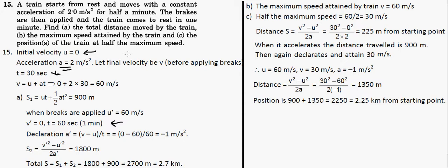First, I need to find the total distance moved by the train. We have the initial velocity, the time, and we need to find the final velocity. Using v = u + at, with initial velocity u = 0, acceleration a = 2 m/s², and time t = 30 seconds, we get v = 60 meters per second.